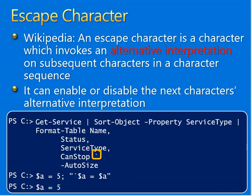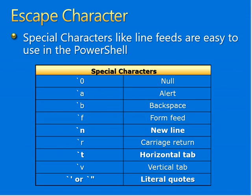Let's have a look at the escape character special characters. Characters like line feeds are easy to use in PowerShell. You can see the characters: 0, a, b, f, n, r, t, v — representing null, alert, backspace, form feed, new line, carriage return, horizontal tab, vertical tab, and literal quote.